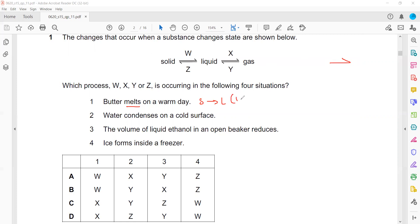Water condenses on a cold surface. If condensation occurs, it means a gas is turning into a liquid. So which arrow is showing a gas turned to a liquid? Gas turned to liquid is shown by Y.